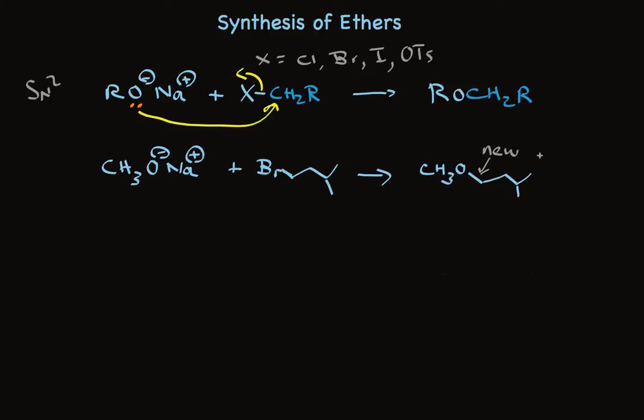The alkoxide can be one of a variety of things, including things that are very hindered, unlike the alkyl partner, which must be primary.